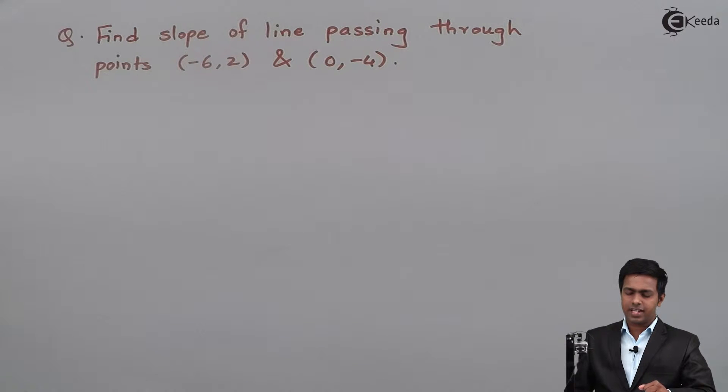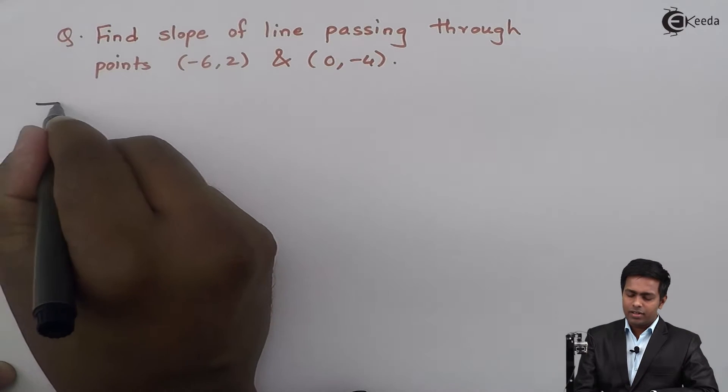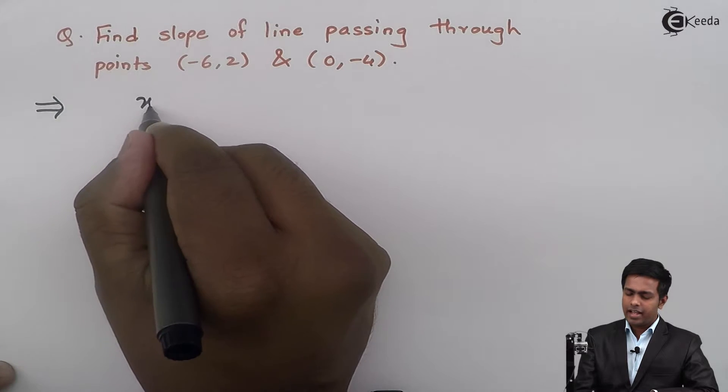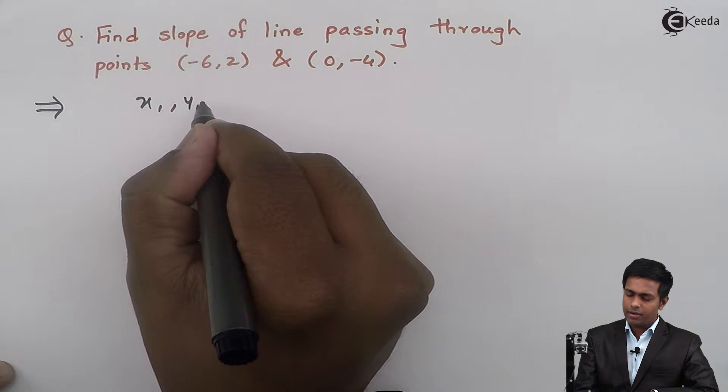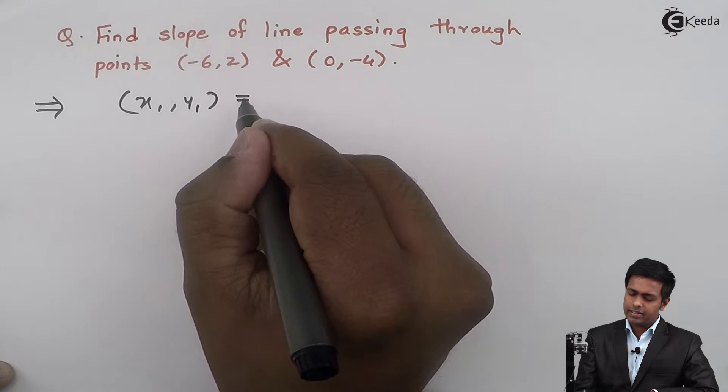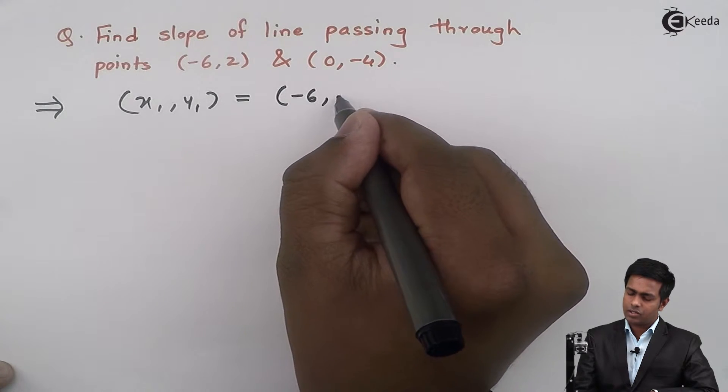One is (-6, 2) and the second one is (0, -4). Now first of all I will assume the first point as (x₁, y₁) and I will say it is equal to (-6, 2).